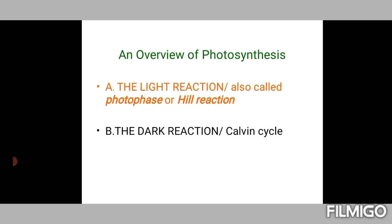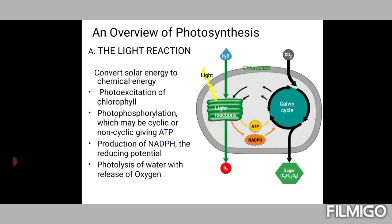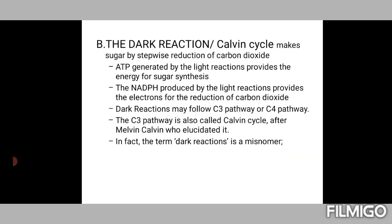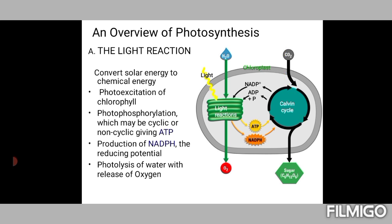Light reaction always takes place during daytime only because sunlight is available then, whereas dark reaction occurs throughout the day whether it is night or day. So 'dark reaction' is actually a misnomer — it should be called the light-independent reaction. The C3 cycle is the main phase of the dark reaction, and there is also a C4 cycle which complements the C3 cycle. In the chloroplast figure shown, water and light energy are utilized to produce ATP and NADPH.